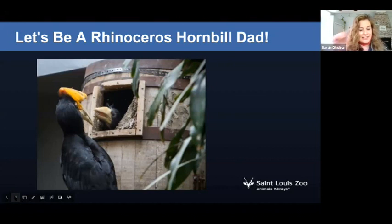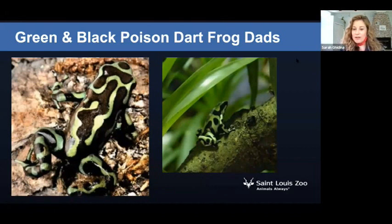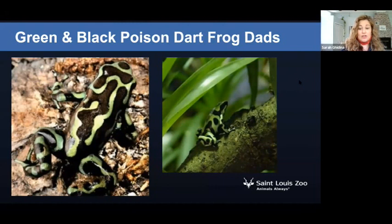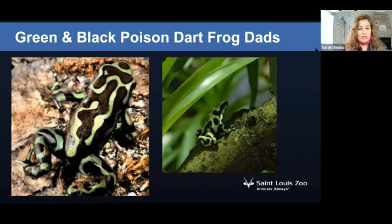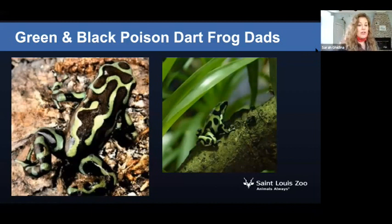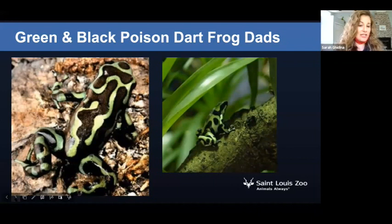Our next zoo dad is the green and black poison dart frog. They are surprisingly good parents. After a female lays the eggs in a pool of water she will leave, but the dad comes back to make sure they stay really wet because the eggs need to be constantly moist. In two weeks those eggs will hatch into tadpoles, and the dad needs to bring them to a new spot to keep them safe. He will come back and the tadpoles will climb on his back one by one, and he will carry them to another pond or body of water. He carries one, drops it off, comes back, another one climbs on — he does this for as many tadpoles as needed. Six weeks later those tadpoles develop into adult frogs.